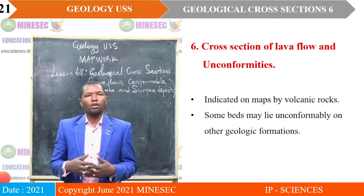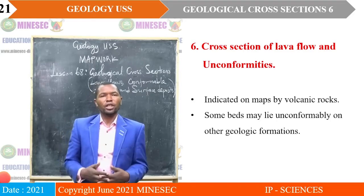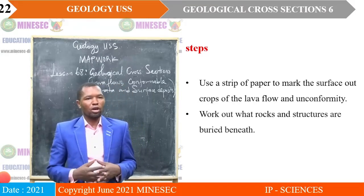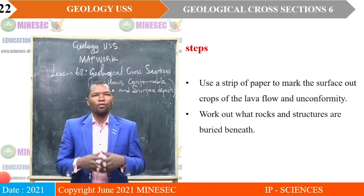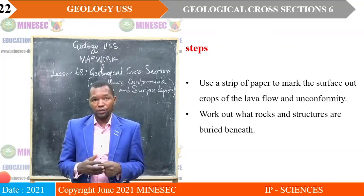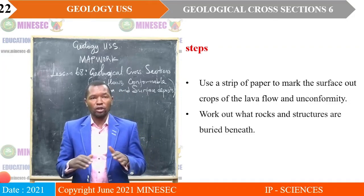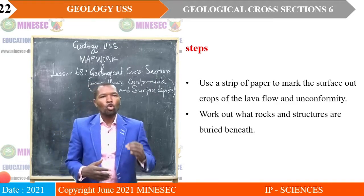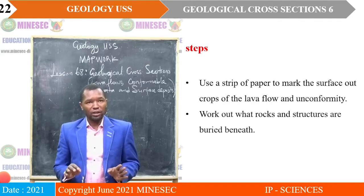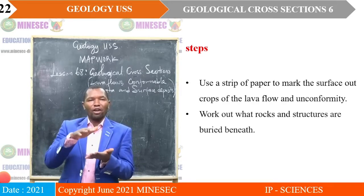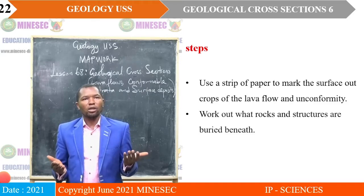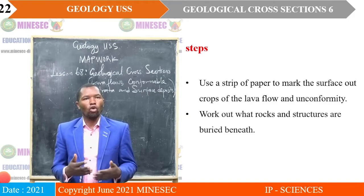Some beds may lie unconformably on others, indicating the presence of unconformities. The steps to draw such cross-sections are: first, use a strip of paper to mark the surface outcrops of the lava flow and the unconformity. Then, work out what rocks and structures are buried beneath — with unconformities or lava flows, they could be lying on other beds, so you work out the structures buried by the unconformity or lava flow.